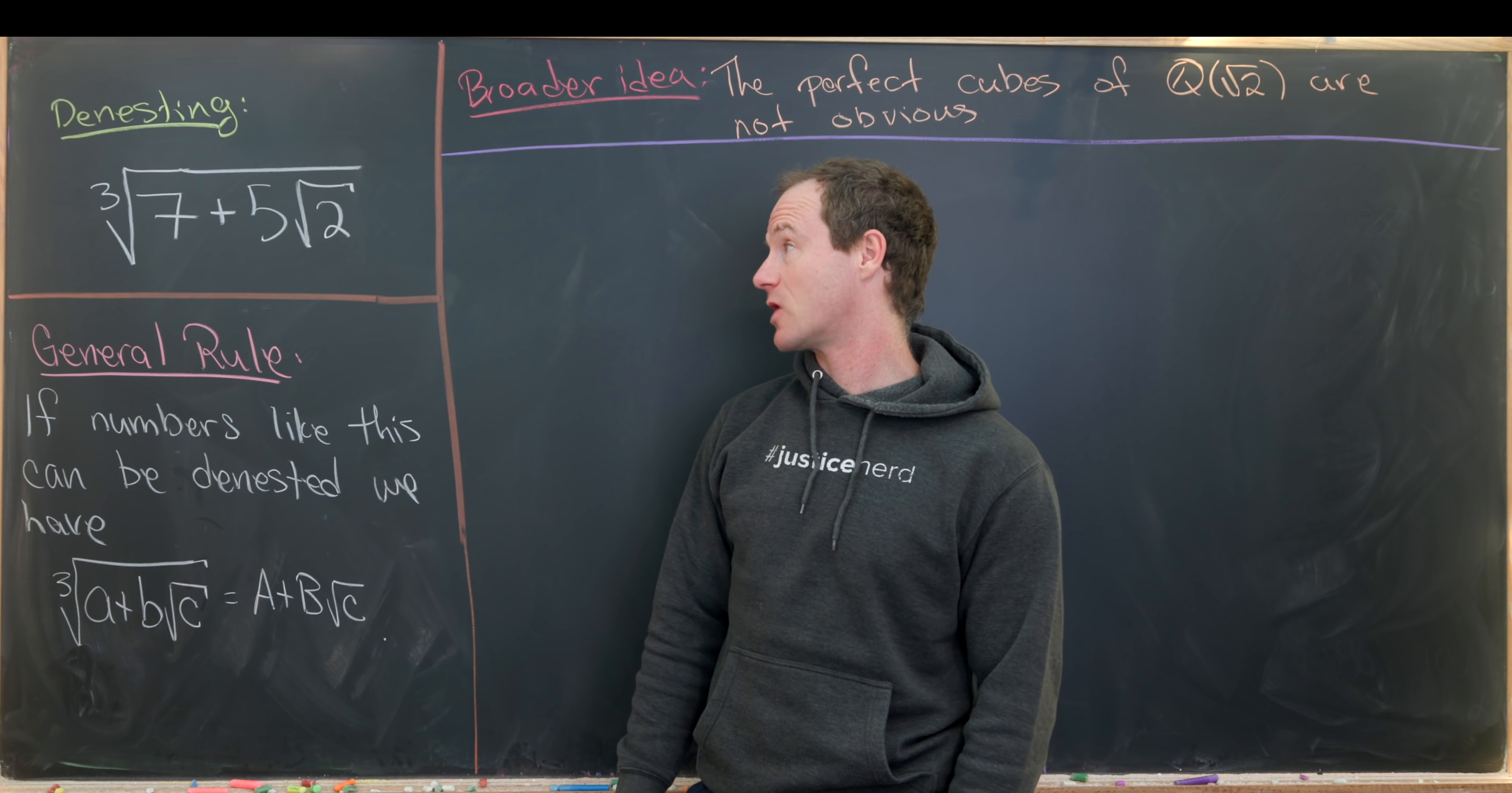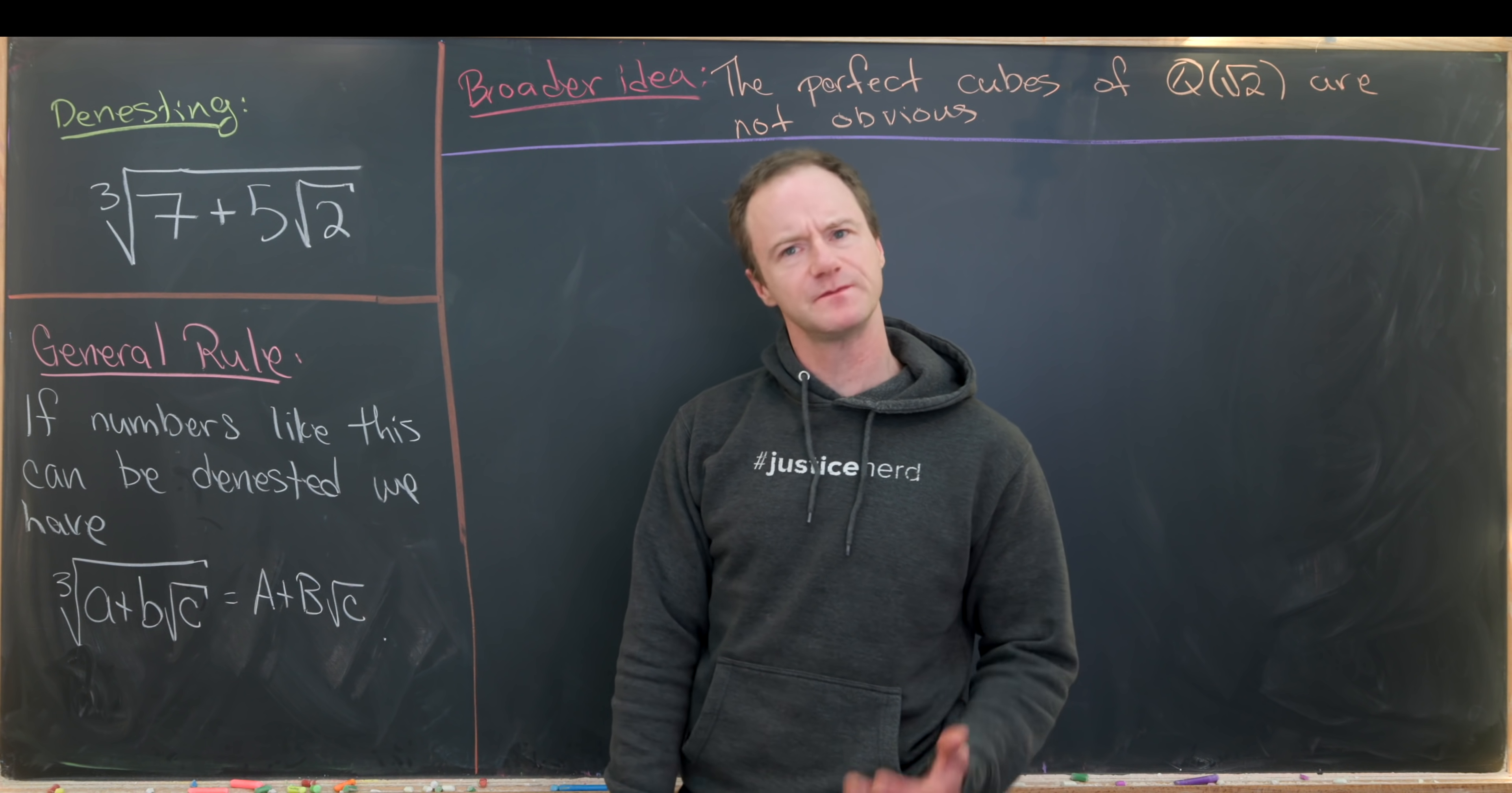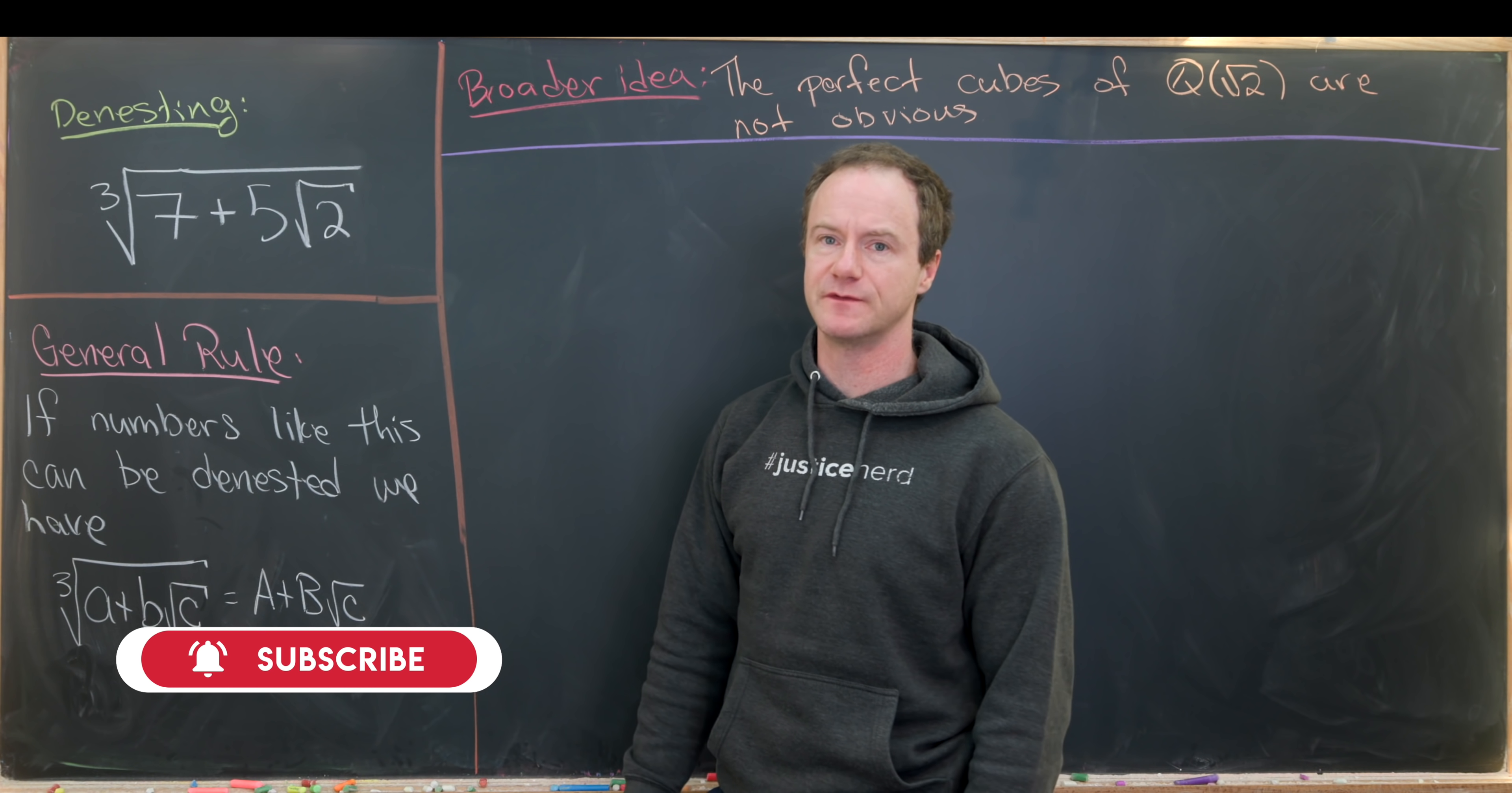Today I want to look at a nice denesting problem for a cube root and inside that cube root is a square root. So in particular we'd like to denest the cube root of seven plus five times the square root of two.